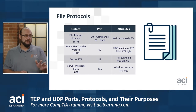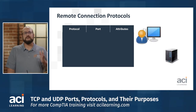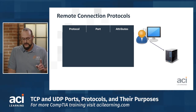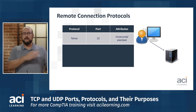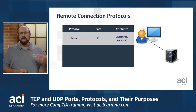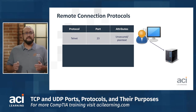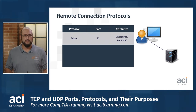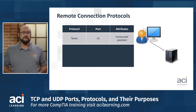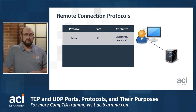Now let's look at remote connection protocols, which allow us to connect over the network when we're not in the same physical location as the computer we're trying to control. First is Telnet — like FTP, one of the very first protocols, originally used to connect to a mainframe via a dumb terminal. Telnet is unencrypted and unsecure — if someone captures that traffic off the wire, they can see exactly what you're doing. Telnet goes over port 23.